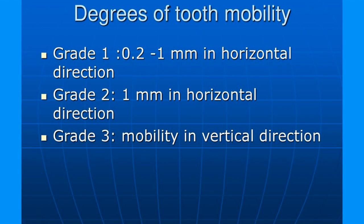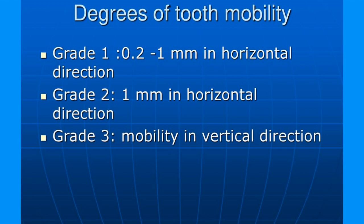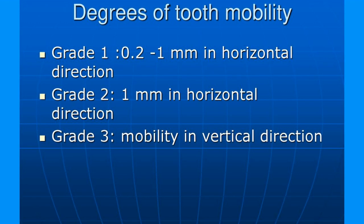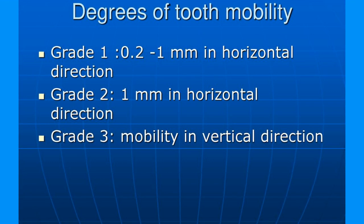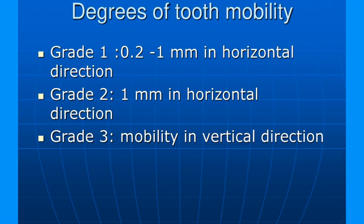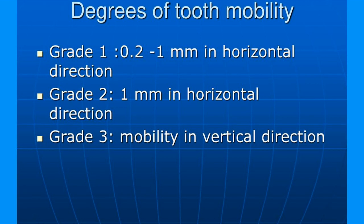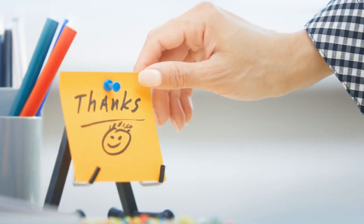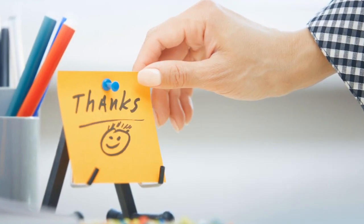So to recap: if you push the tooth and it is slightly moving, that is less than one millimeter — Grade 1. If it is moving a little bit more than usual, that is Grade 2. If it is moving very freely — as seen in pediatric patients, where children's teeth move very much — that is Grade 3.